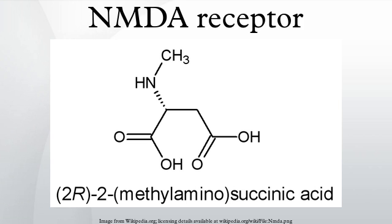Antagonists of the NMDA receptor are used as anesthetics for animals and sometimes humans, and are often used as recreational drugs due to their hallucinogenic properties, in addition to their unique effects at elevated dosages such as dissociation. When certain NMDA receptor antagonists are given to rodents in large doses, they can cause a form of brain damage called Olney's lesions. NMDA receptor antagonists shown to induce Olney's lesions include ketamine, phencyclidine, and dextromethorphan, as well as some NMDA receptor antagonists used only in research environments. So far, the published research on Olney's lesions is inconclusive regarding its occurrence in human or monkey brain tissues.